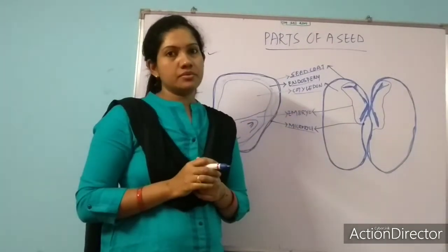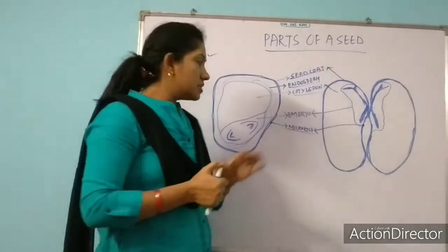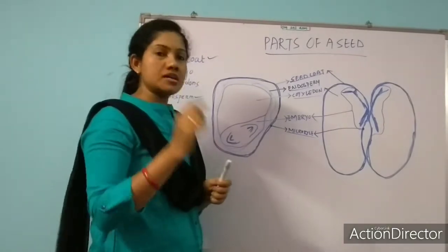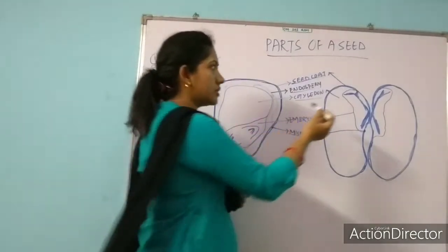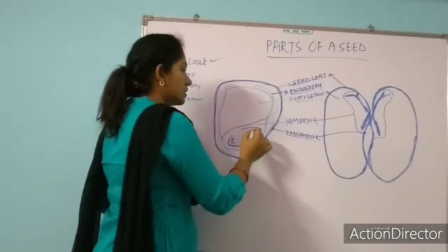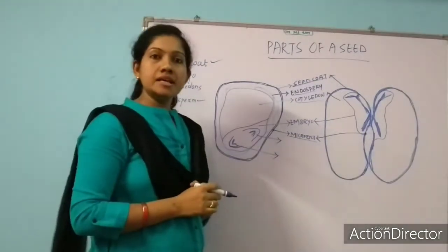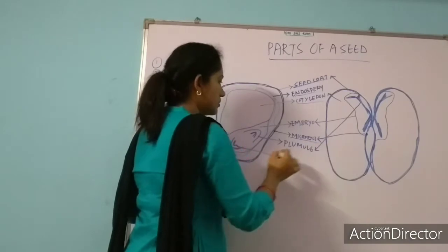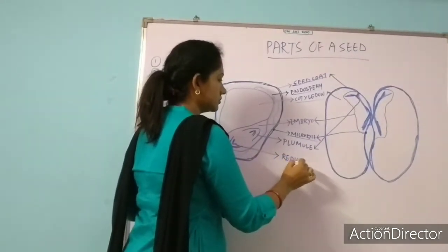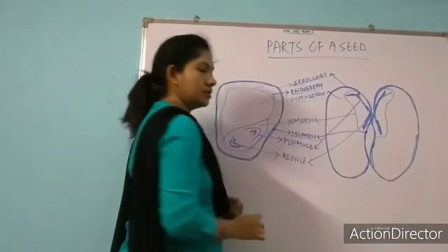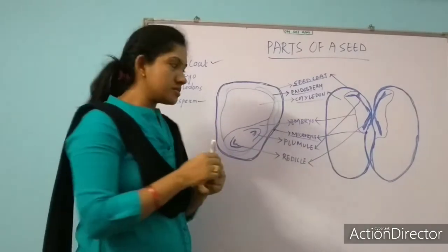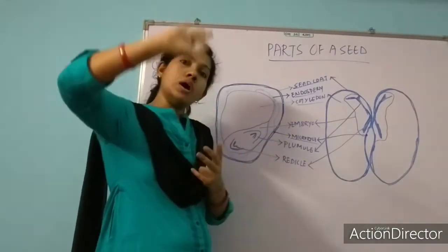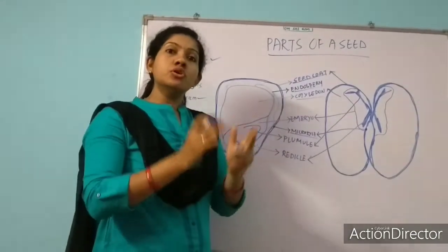Embryo is the main part of a seed. When the seed germinates, germination takes place from the embryo only. An embryo has two parts: radicle and plumule. The plumule generally gives rise to the shoot — it goes up. The radicle gives rise to the root — it comes down. I will show you the details in the germination topic.